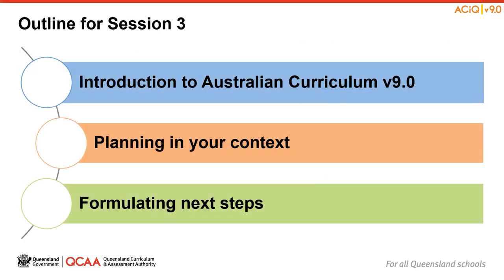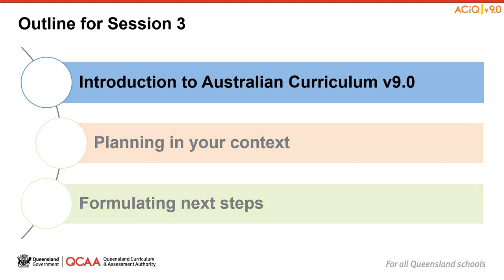There are three parts to this session. We will begin with an introduction to Australian Curriculum Version 9. Then you will consider planning for your particular context. Finally, you will finish the session by considering the next steps that could be taken now that you are familiar with the changes in Australian Curriculum Version 9. We began sessions 1 and 2 in the series by orienting ourselves to a process we can use to engage with these changes. Let's briefly review that process now.